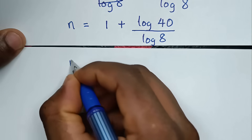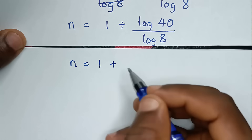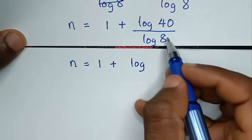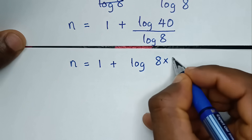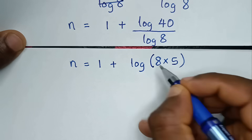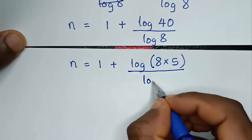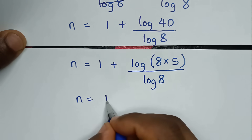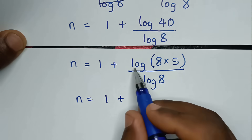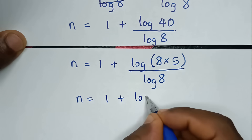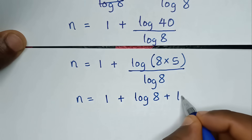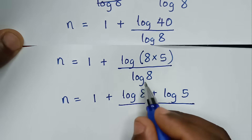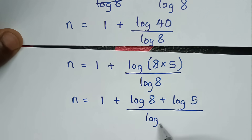Then in the next step, it will be n is equal to 1 plus log of 40 over log of 8, where 40 is the same as 8 times 5. So log of 8 times 5 is the same as log of 8 plus log of 5, over log of 8.